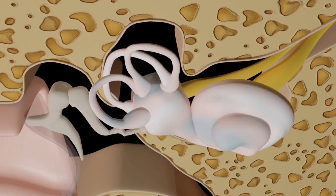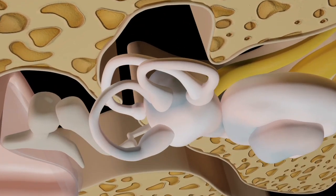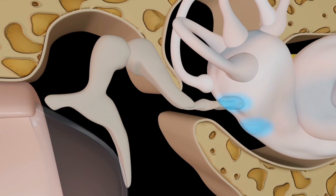Conversion to electrical signals. Cochlea. Inside the cochlea, thousands of hair cells are stimulated by the vibrations. This stimulation is converted into electrical signals.